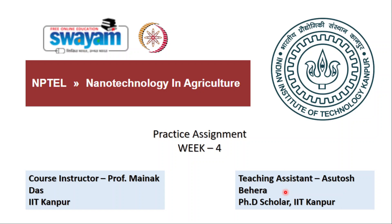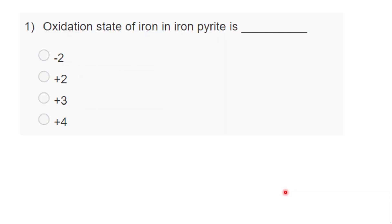I'll request all students to turn off their mic and video. Let's start with question number one, corresponding to all the lectures in week four. I'll read it out: what is the oxidation state of iron in iron pyrite? Option A: minus two, option B: plus two, option C: plus three, option D: plus four.